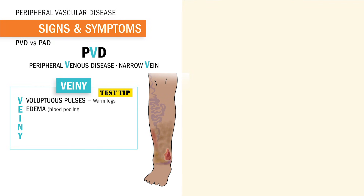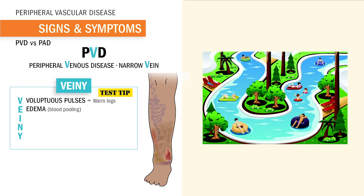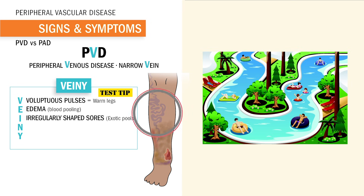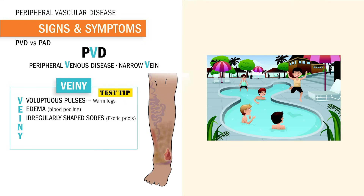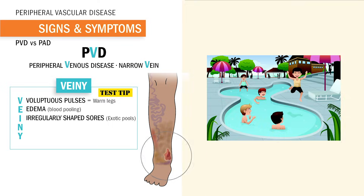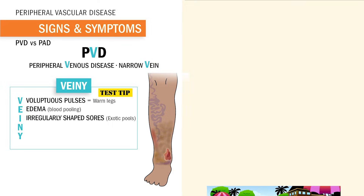E stands for edema, where blood starts pooling. Think of an oxygen pool party in PVD. I is for irregularly shaped sores. Think of this pool party as an exotic pool that has a weird shape, which is very different than the boring PAD that's just round and smooth.